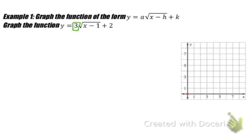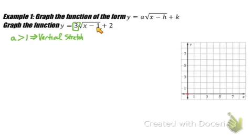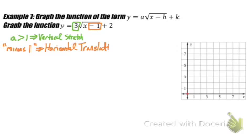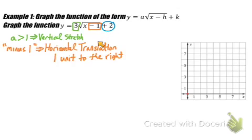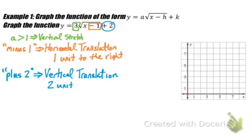The digit itself is 3, and because a is greater than 1, we know we're going to have a vertical stretch — it should be a lot taller than our parent graph. Within the square root, in the radicand, we have a minus 1, so we have a horizontal translation to the right one unit. Then we have a plus 2 on the outside, which means we vertically translate the entire graph two units up.